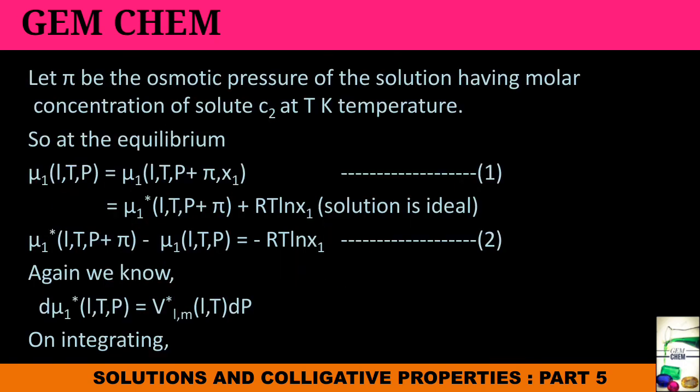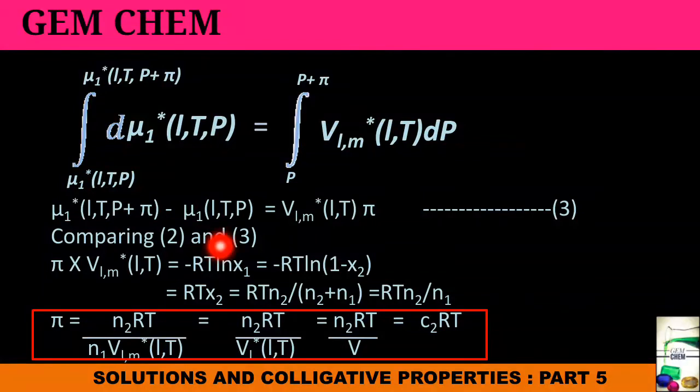This is our equation 3, and when we compare this equation 3 with equation 2, then our expression is being obtained just like this. I have already told you that X1 is a mole fraction of solute and X2 is a mole fraction of solvent. From here only we can understand that 1 minus X2 is being obtained as X1 plus X2 is always equal to 1. We can write it like this: RTX2 equals RT n2 by n2 plus n1, that is we are elaborating the term X2 which is our mole fraction for the solvent.